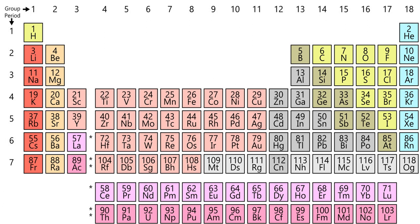Oganesson may or may not be a noble gas. It was originally predicted to be a noble gas but may instead be a fairly reactive solid with an anomalously low first ionization potential and a positive electron affinity due to relativistic effects. On the other hand, if relativistic effects peak in period seven at element 112, copernicium, oganesson may turn out to be a noble gas after all, albeit more reactive than either xenon or radon. Credible predictions on its status as either a metal, nonmetal, or metalloid appear to be absent.